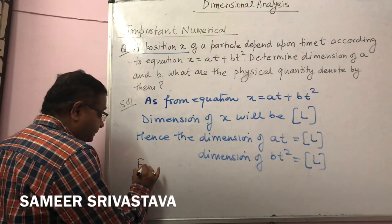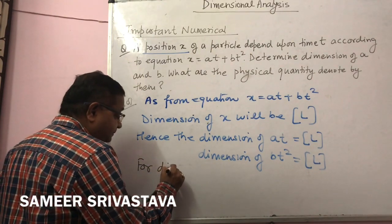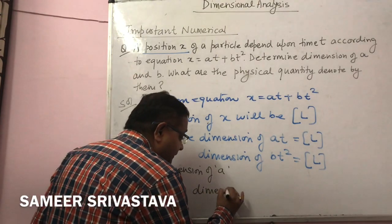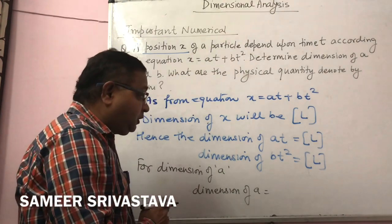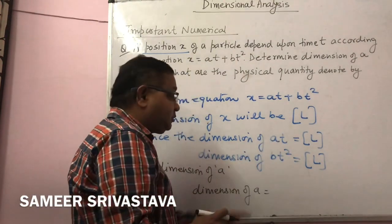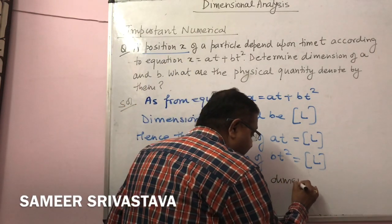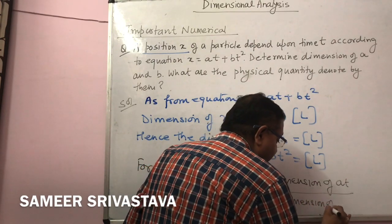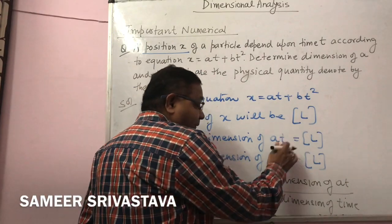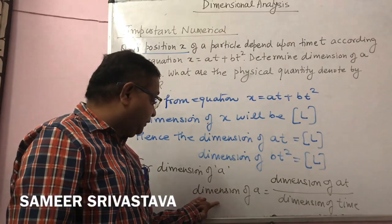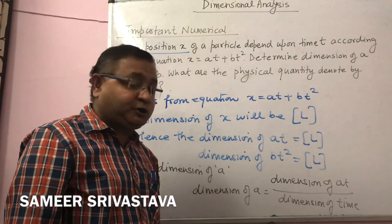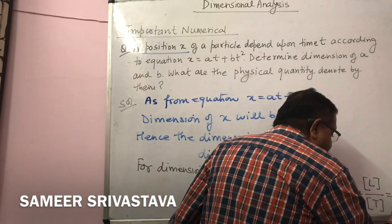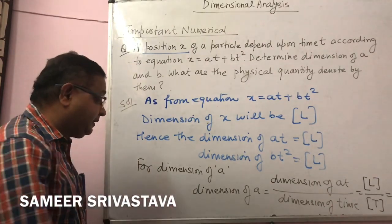To find the dimension of a, we write: dimension of a = dimension of (at) divided by dimension of t. If we divide by time, time cancels out and only a remains. Dimension of at is L, dimension of time is T, so the result is LT⁻¹. The dimension of a is LT⁻¹.